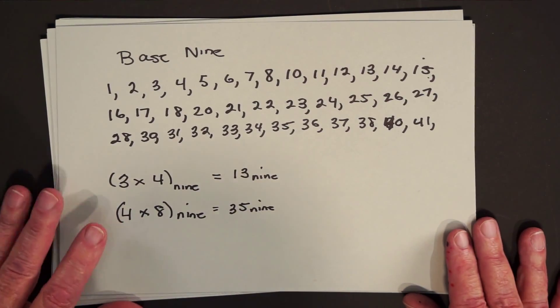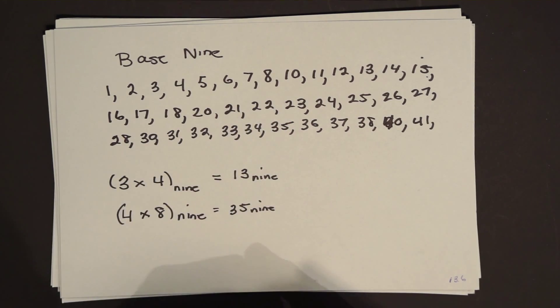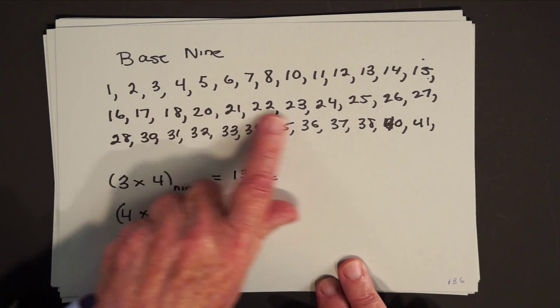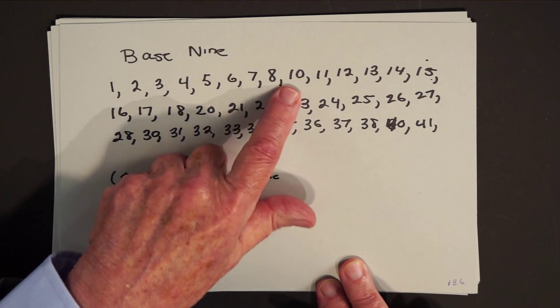At any rate, to go on a step further, to help you appreciate even more what the students are going through, let's take a base that's closer to base 10. How about base 9, where you trade in by 9's rather than by 10's? Now you'd have to learn, this would be your number line, 1, 2, 3, 4, 5, 6, 7, 8, 1, 0, 1, 1.